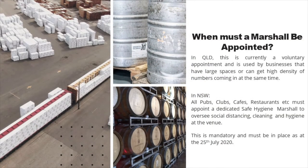When must a marshal be appointed? In Queensland this is currently a voluntary appointment, used by businesses that have large spaces or can get high density of numbers coming in at the same time. In NSW, all pubs, clubs, cafes, restaurants etc. must appoint a dedicated safe hygiene marshal to oversee social distancing, cleaning and hygiene at the venue. This is a mandatory requirement in NSW as at 25 July 2020.